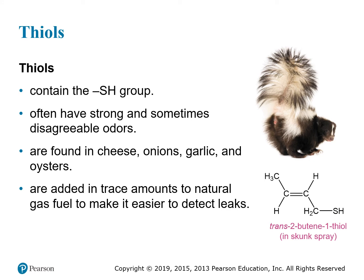Thiols are analogous to alcohols but have an SH group instead of an OH group. Chemically they behave similarly in some situations because sulfur is right below oxygen on the periodic table. But thiols have a very strong and often unpleasant odor — they're part of the components that give cheese, onion, garlic, and oysters their particular smell. Thiols are also added to natural gas fuel to make leaks detectable, since natural gas itself (mostly methane) has no natural odor.